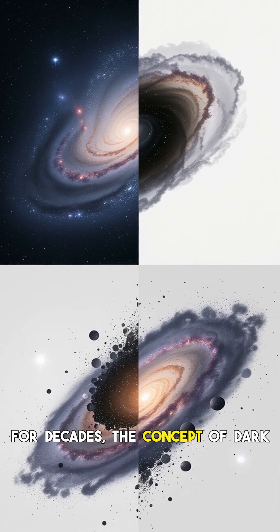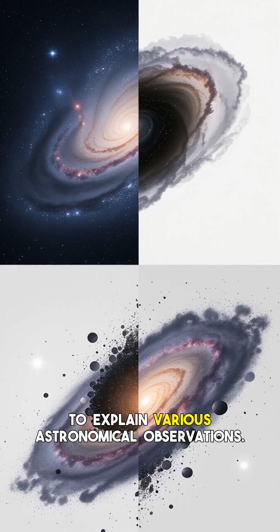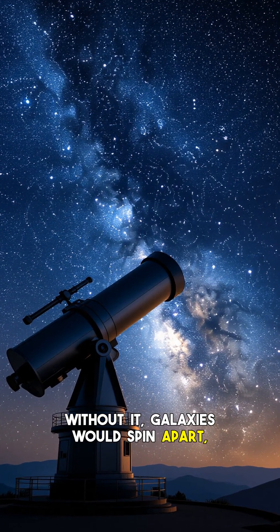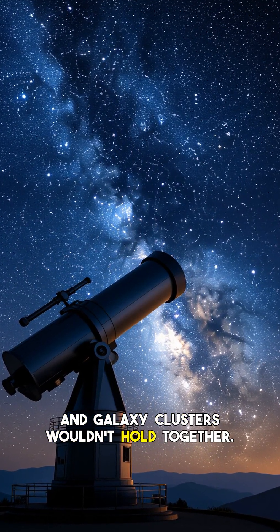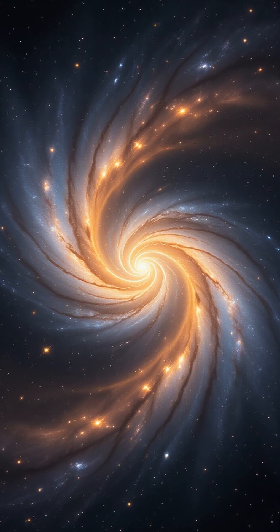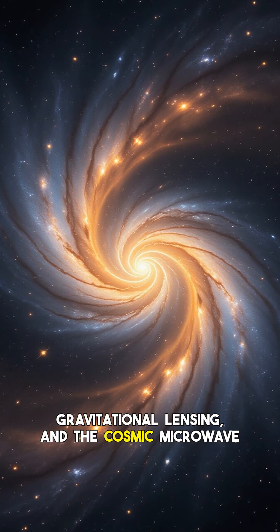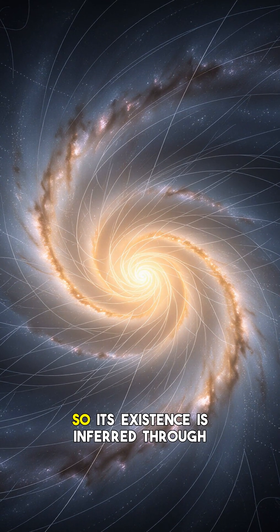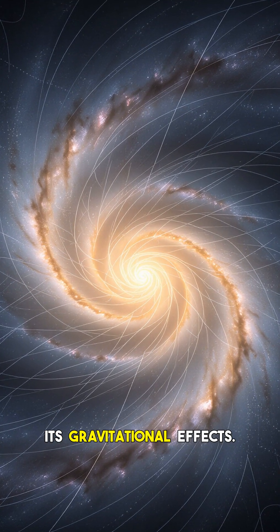For decades, the concept of dark matter has been essential to explain various astronomical observations. Without it, galaxies would spin apart, and galaxy clusters wouldn't hold together. Evidence for dark matter comes from rotational curves of galaxies, gravitational lensing, and the cosmic microwave background. We can't see it or directly detect it, so its existence is inferred through its gravitational effects.